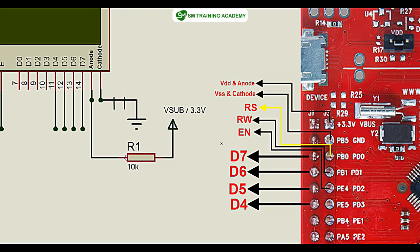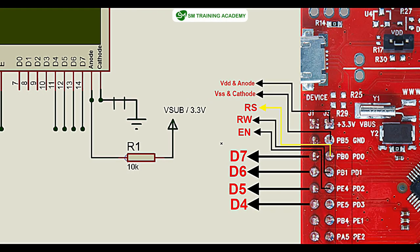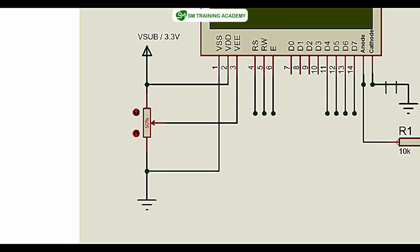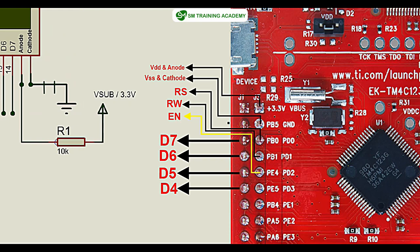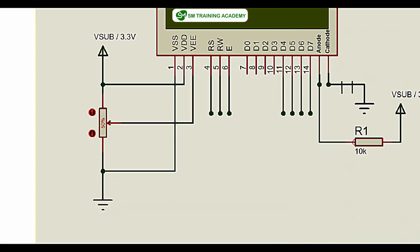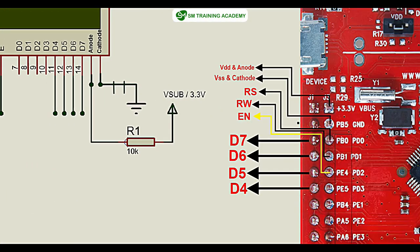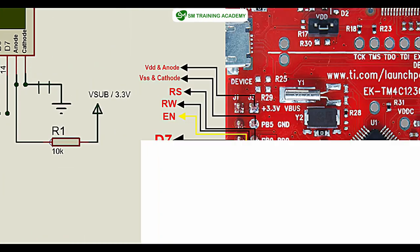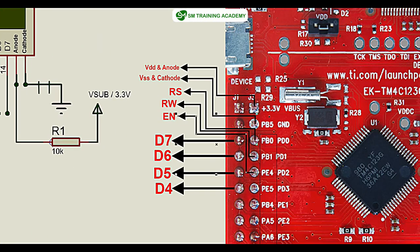The fourth pin, the RS pin, will be connected to PD0 of the microcontroller. The RW pin will be connected to PD1, and the enable pin of the LCD display will be connected to PD2. So RS goes to PD0, RW to PD1, and enable to PD2.